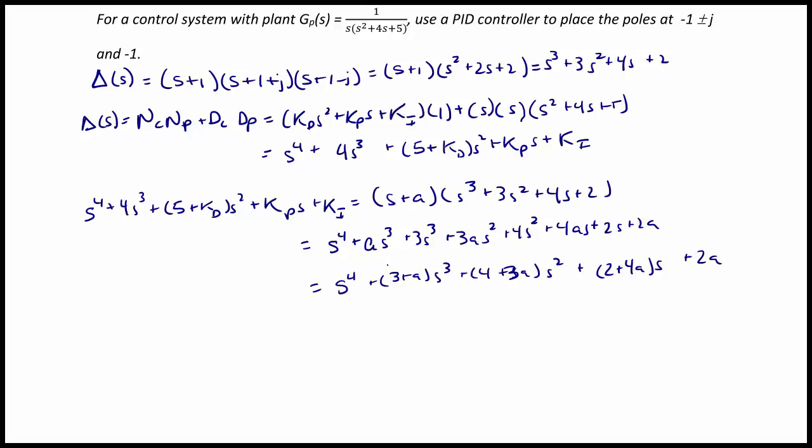And now let's equate coefficients. 3 plus a equals 4, so a is equal to 1. 4 plus 3a equals 5 plus kd, so kd equals 2. 2 plus 4a equals kp, so kp equals 6. And 2a equals ki.